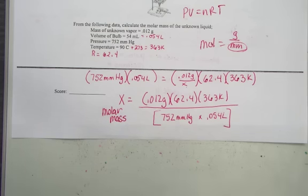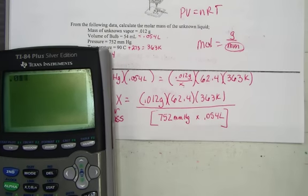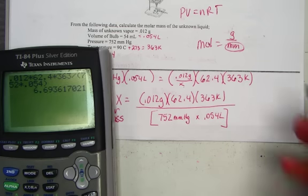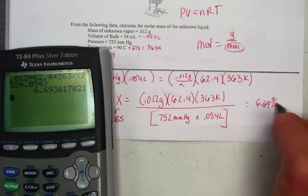So let's see what we've found. 0.012 times 62.4 times 363, divided by 752 times 0.054 in parentheses, and the molar mass of our gas is 6.69 grams per mole.